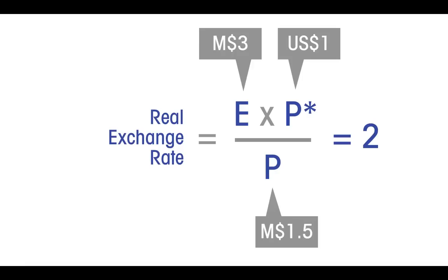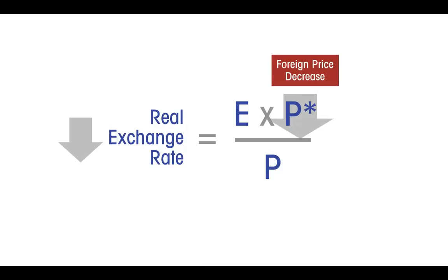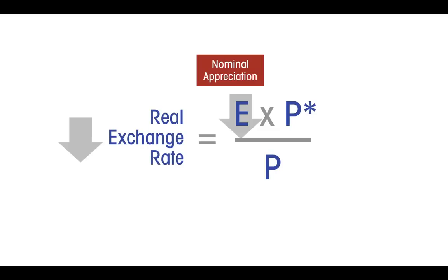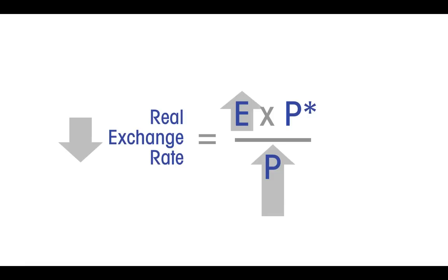But now that we have the formula, we can see again how the events discussed earlier would affect the real exchange rate. The fraction will take a lower value if any of the terms in the numerator fall in value — the price level in the foreign country or the nominal exchange rate — or if the local price level in the denominator takes a higher value. The formula also reveals that it is relative changes in these components that matter. If local inflation is greater than the rate of nominal depreciation, the real rate appreciates. Similarly, at an unchanged nominal exchange rate, if local inflation is greater than inflation in the foreign country, there will have been a real appreciation, meaning a fall in the real exchange rate.